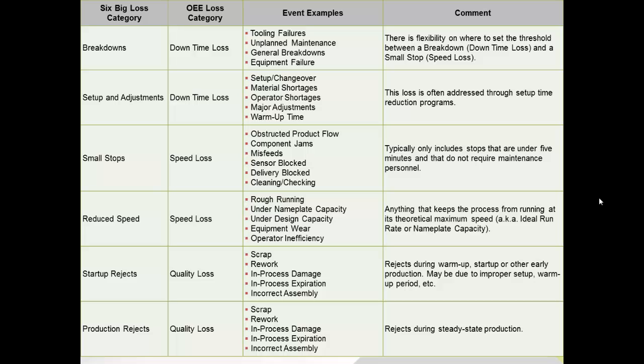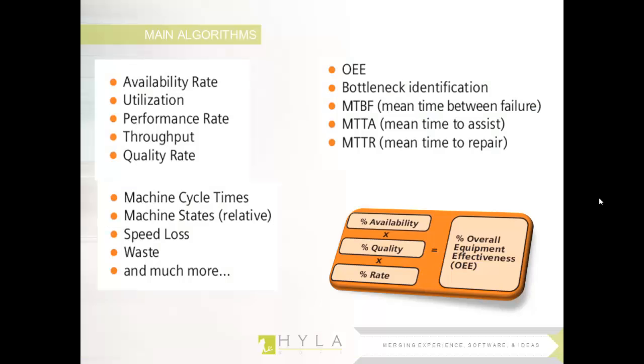Siemens OEE provides the six big loss categories: breakdown and setup and adjustments as part of your downtime loss or availability; small stops and reduced speeds as speed loss related to your output or throughput; and quality loss of startup rejects and production rejects related to quality. All this information is tracked and recorded in real time with the Siemens solution, giving you a better understanding of what's actually happening in your plant. The more information you can get in real time helps you react sooner and better to situations during the production process.